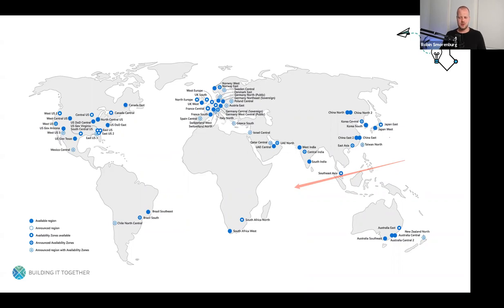Azure is a global cloud service platform comprising two key components: the physical infrastructure and the global network. The physical infrastructure at this point consists of more than 160 data centers divided across 54 regions, all connected to the global Azure network. A region is a set of data centers to ensure high availability, and each region has a pair.